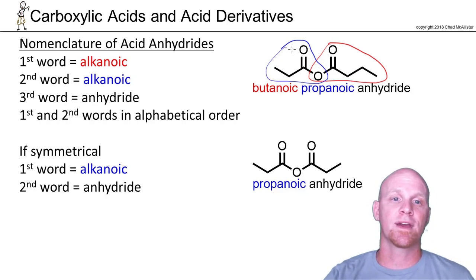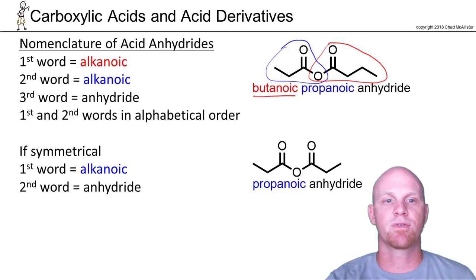It is named from the carboxylic acids it is derived from. In this case, butanoic versus propanoic. Butanoic comes first in the alphabet. So it turns out you're going to name those two carboxylic acids it comes from as your first two words, and you'll name them in alphabetical order.